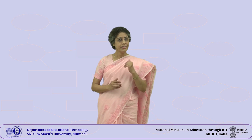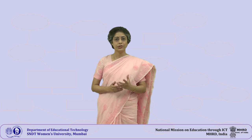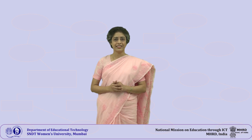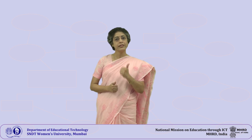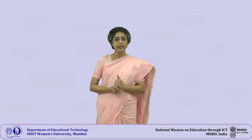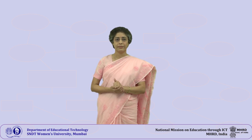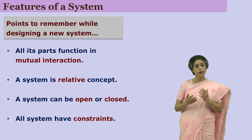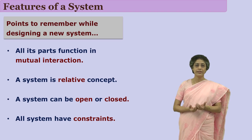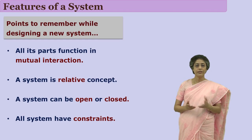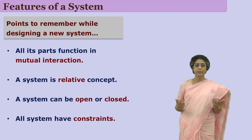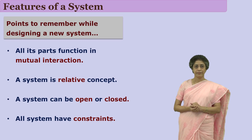As an educational technologist you should be an effective and efficient system designer. If you plan to design and develop a system, you need to remember certain points. Those points are the features of a system. A system has components, and all components of a system function in mutual interaction, so if any part gets damaged the entire system may collapse or dysfunction.